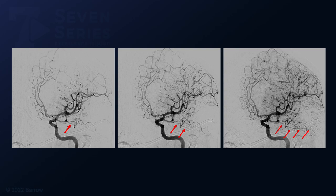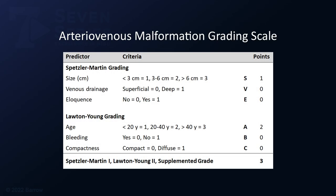These angiographic images are from six months later. They finally demonstrate a small tangle on the basal temporal surface with an early arterialized draining vein running along this basal temporal surface. This vein is shown with the red arrows. This was a Spetzler-Martin grade 1 AVM and a Lawton-Young grade 2 AVM for a supplemented grade of 3.